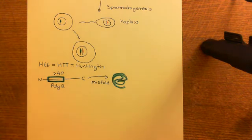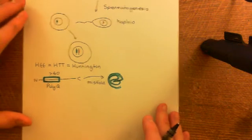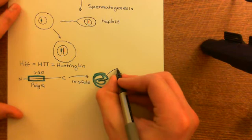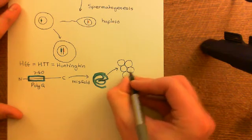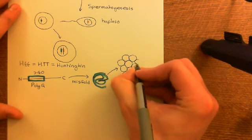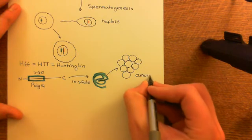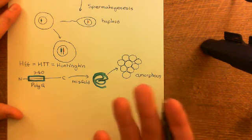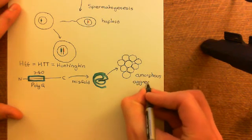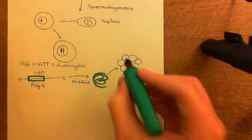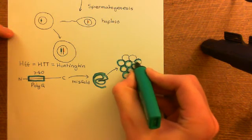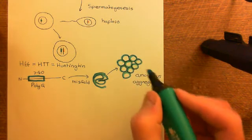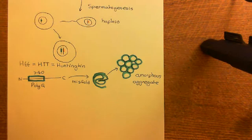Once you've got this misfolded protein, what it's going to do is aggregate together. There are speculated to be two different ways that it can aggregate. First, it can just aggregate into amorphous aggregates — basically when loads of misfolded Huntingtin proteins stick together in just a great blob. An amorphous aggregate means it doesn't have any distinguishable shape. The Huntingtin protein is in the cytoplasm, so this will be occurring within the cytoplasm, and you can also get it occurring in the nucleus as well.